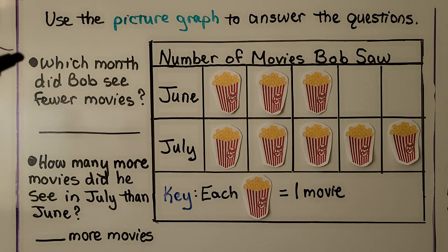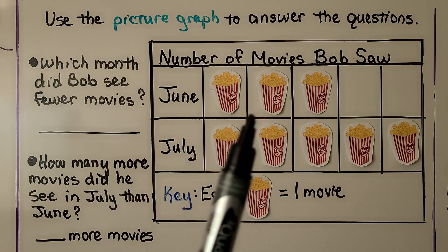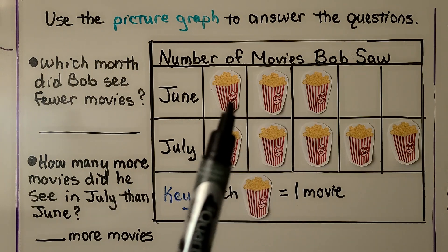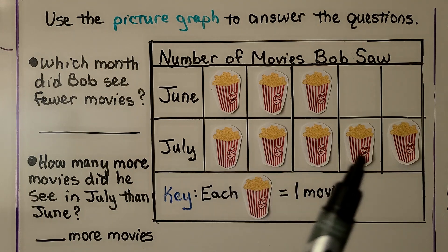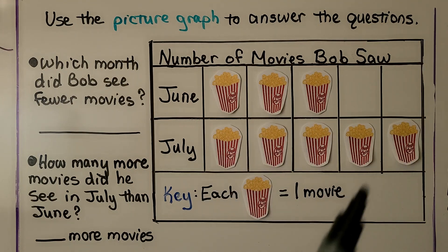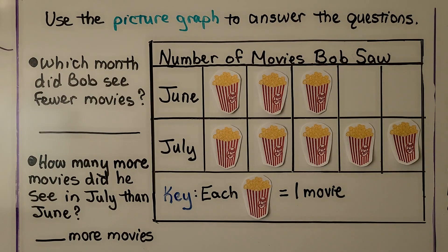Here's the first question: which month did Bob see fewer movies? We can see there are three boxes of popcorn for June and five for July. If each box of popcorn equals a movie, the fewest would be June.